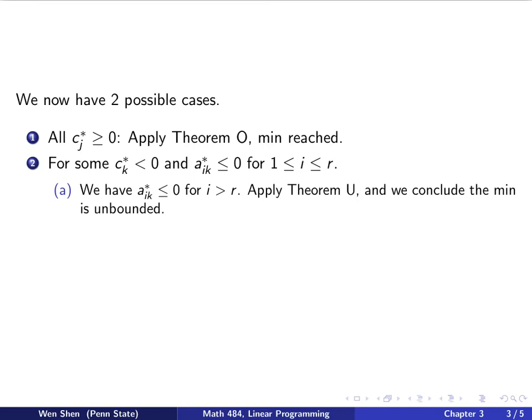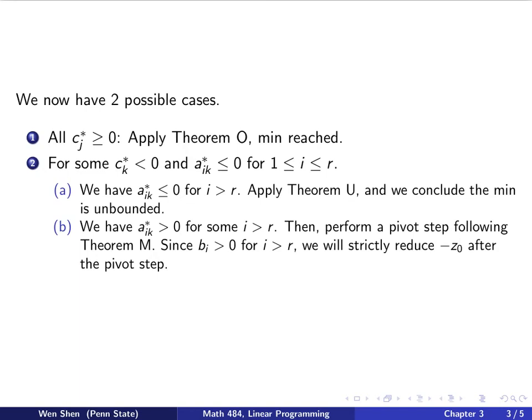Part a. So, under this case, now we look at the ai case for the i bigger than r, and we found that they are all less than or equal to zero. Then this means now we can apply theorem u, and then we can conclude that the minimum is unbounded. And part b is still under this assumption, and then we look at the ai case for i bigger than r, and we found that some of them are positive.